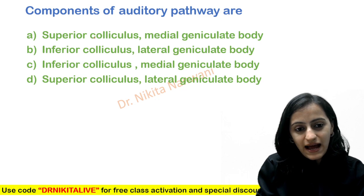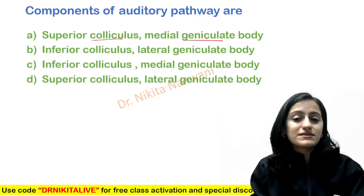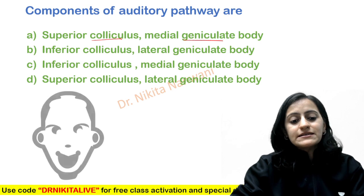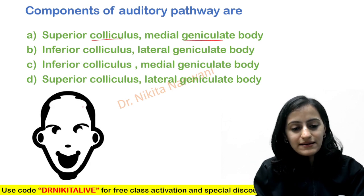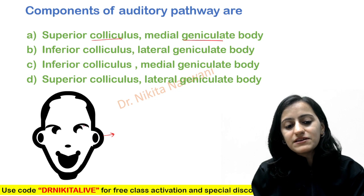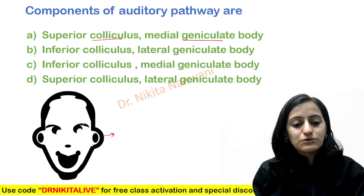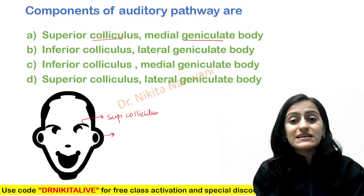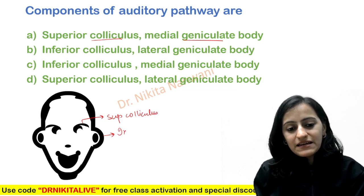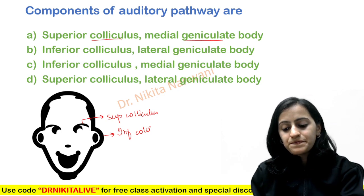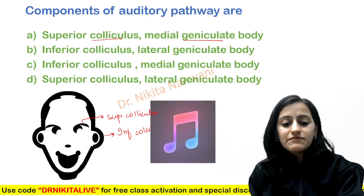To remember which is the colliculus and which is the geniculate body — whether it is superior, medial, lateral, or inferior — remember that the ears and the auditory pathway are located inferiorly compared to the eyes. So the superior colliculus is for the eyes, and the inferior colliculus is for the ears.